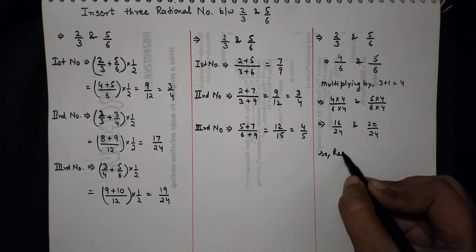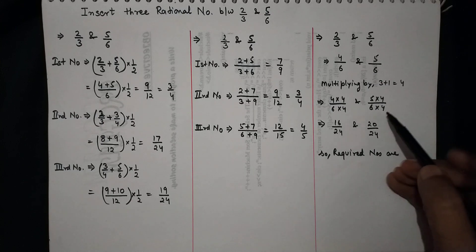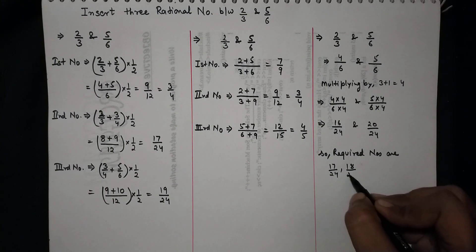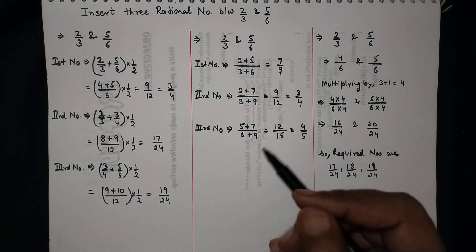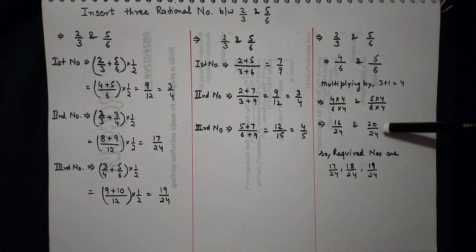So these were all three different methods to find rational numbers between two given rational numbers. If we want a larger number of terms between two given numbers — such as 100 or 20 numbers — the first two methods are not that effective. So we go for the third method, the LCM method, when we need a large quantity of rational numbers.